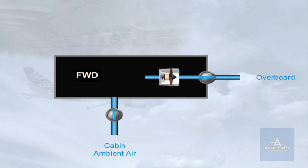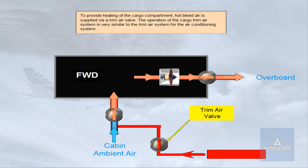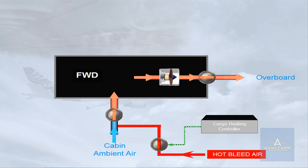To provide heating of the cargo compartment, hot bleed air is supplied via a trim air valve. The operation of the cargo trim air system is very similar to the trim air system for the air conditioning system. Each cargo compartment has a cargo heating controller which controls the trim air valve position to regulate the temperature of the compartment.